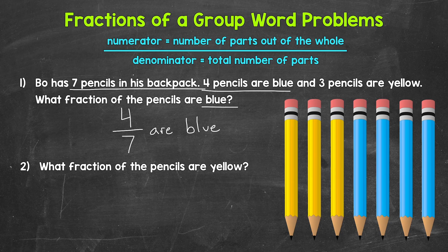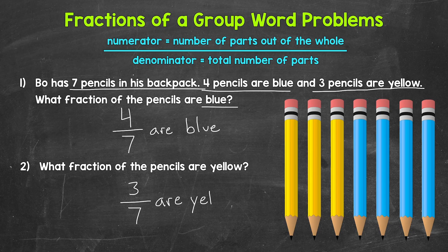Moving on to number two: what fraction of the pencils are yellow? The denominator is seven again. Now we need the numerator — the number of yellow pencils. Bo has three pencils that are yellow, so three is our numerator. Three out of the seven pencils are yellow. Our fraction is three sevenths. Three sevenths of the pencils are yellow. There's a visual of seven pencils to help picture these word problems, and visuals will be provided for the other examples as well.